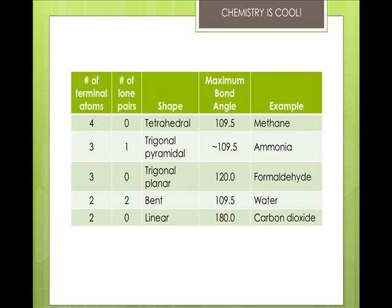So, to review, if the terminal atom and the lone pairs equal 4, the bond angles are close to 109.5. If the terminal atom and the lone pairs equal 3, the bond angles are close to 120, and if the terminal atom and the lone pair is equal to 2, the bonds are close to 180. This is something that I would highly recommend you memorize this chart to help you.